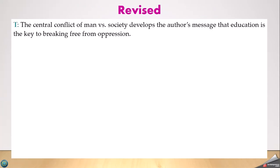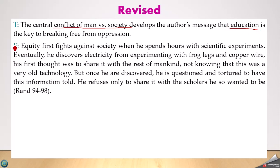Now let's look at the revision. The revised topic sentence reads: 'The central conflict of man versus society developed the author's message that education is the key to breaking free from oppression.' Now we have correct interpretation — it's looking at conflict, not imagery. We have a very clear topic sentence. What's interesting is the writer kept some summary, which is properly cited this time. Having summary once in a while is acceptable, but if you have summary in every paragraph it won't work.